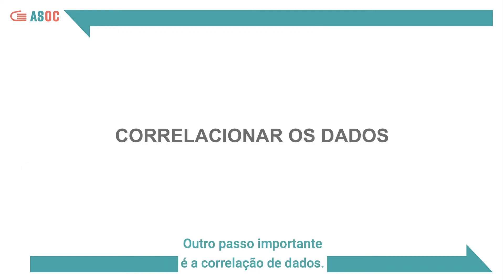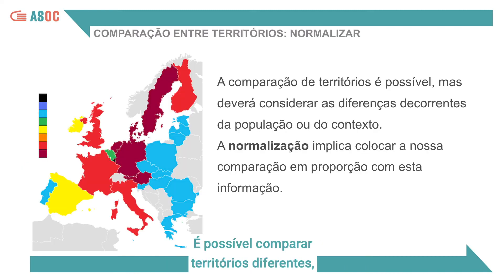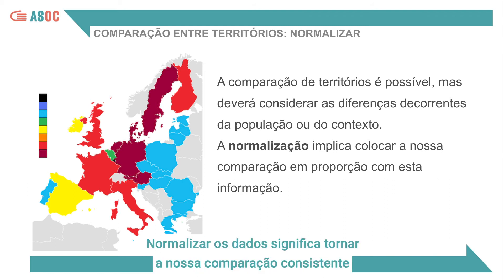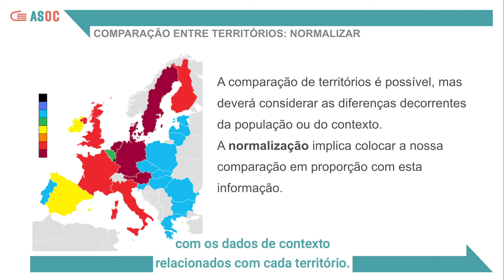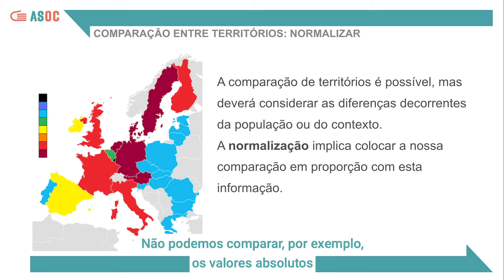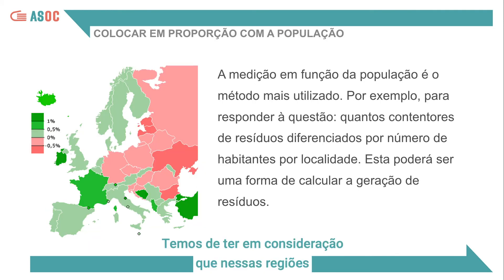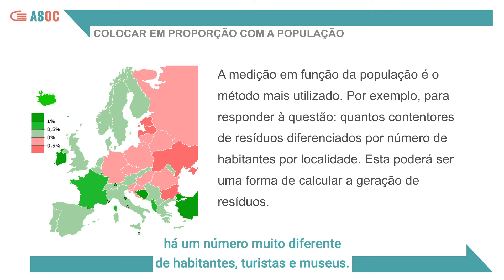Another important step is correlation of data. Comparing different territories is possible, but you need to consider the differences arising from population or context. Normalising the data means making our comparison consistent with the context data relating to each territory. We cannot compare, for example, the absolute values of the number of visitors to museums in a small region with those of a large and densely populated region. We have to consider that in these regions there is a very different number of inhabitants, tourists and museums.